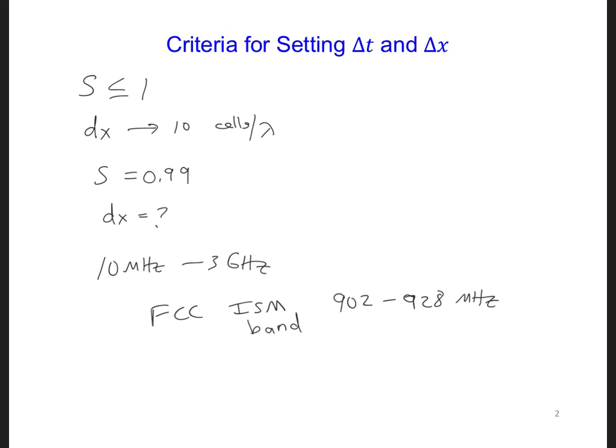What we could do is use a pulse that is limited to this frequency range. If we limit the spectrum of our source to be from 902 to 928 MHz, what do you think we should set dx equal to in our model?